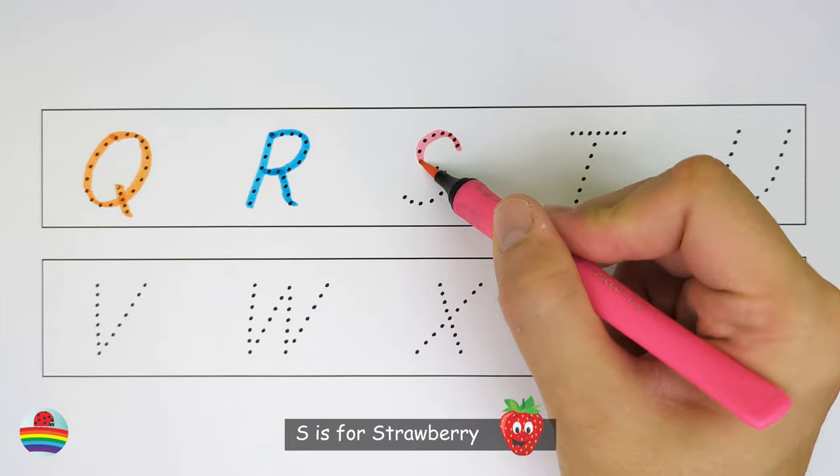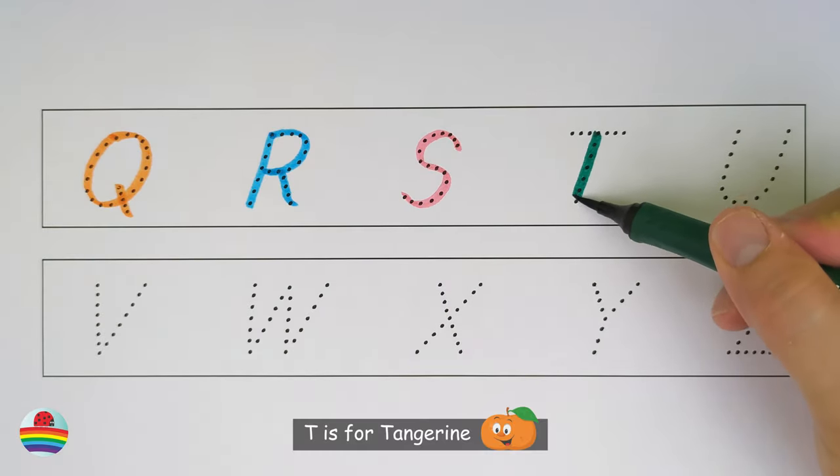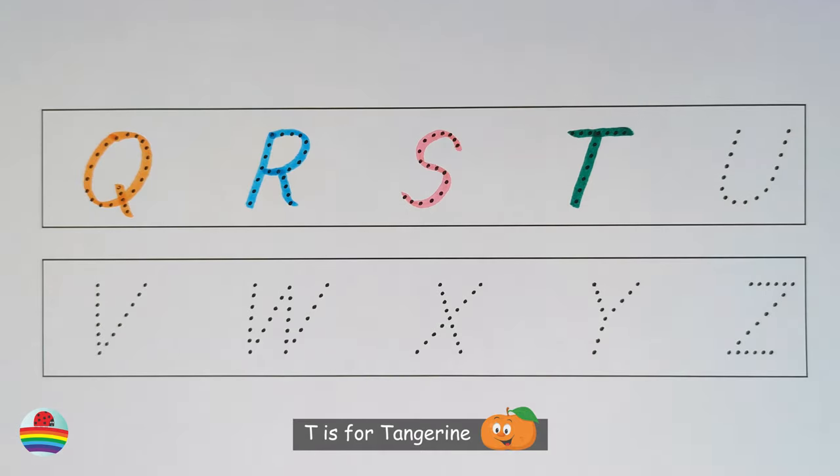S. S is for strawberry. T. T is for tangerine. U. U is for ugly fruit.